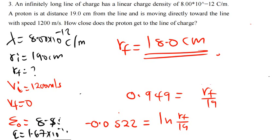So R_final is 18.0 centimeters — that is the closest the proton gets to the line of charge. It's just a matter of knowing those three formulas: potential energy as charge times voltage, conservation of energy, and the voltage difference formula for an infinite line of charge. When you see any question about an infinite long line of charge, remember these principles, identify what is missing, and solve.